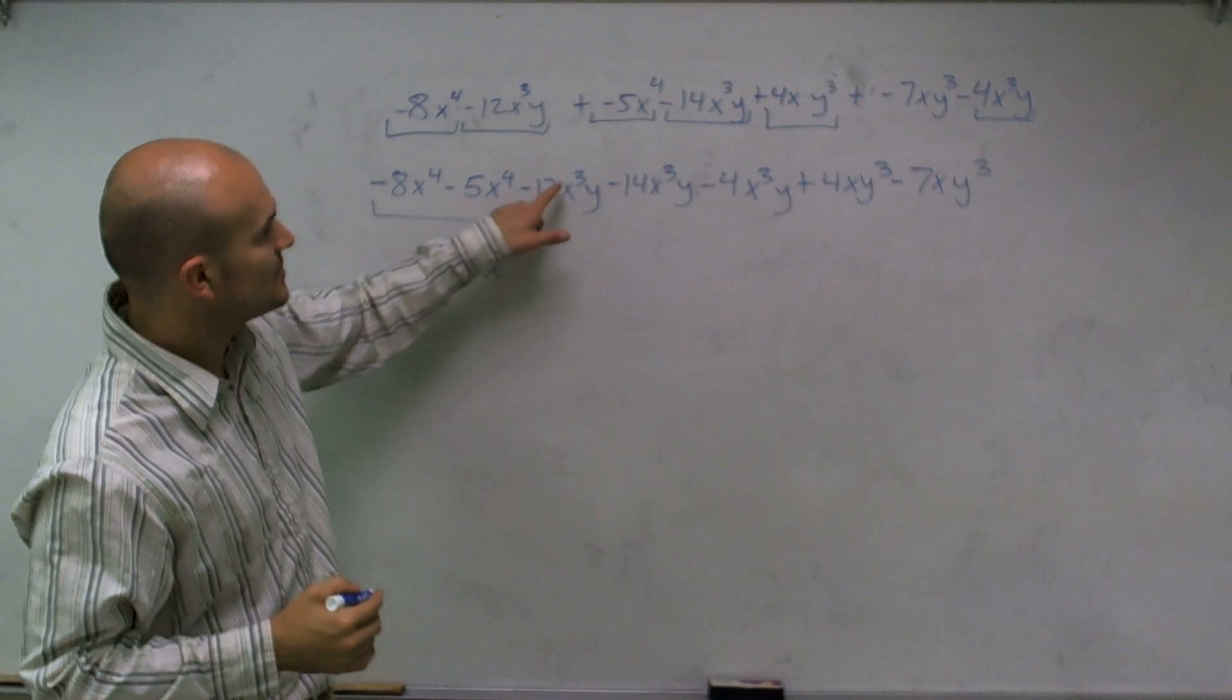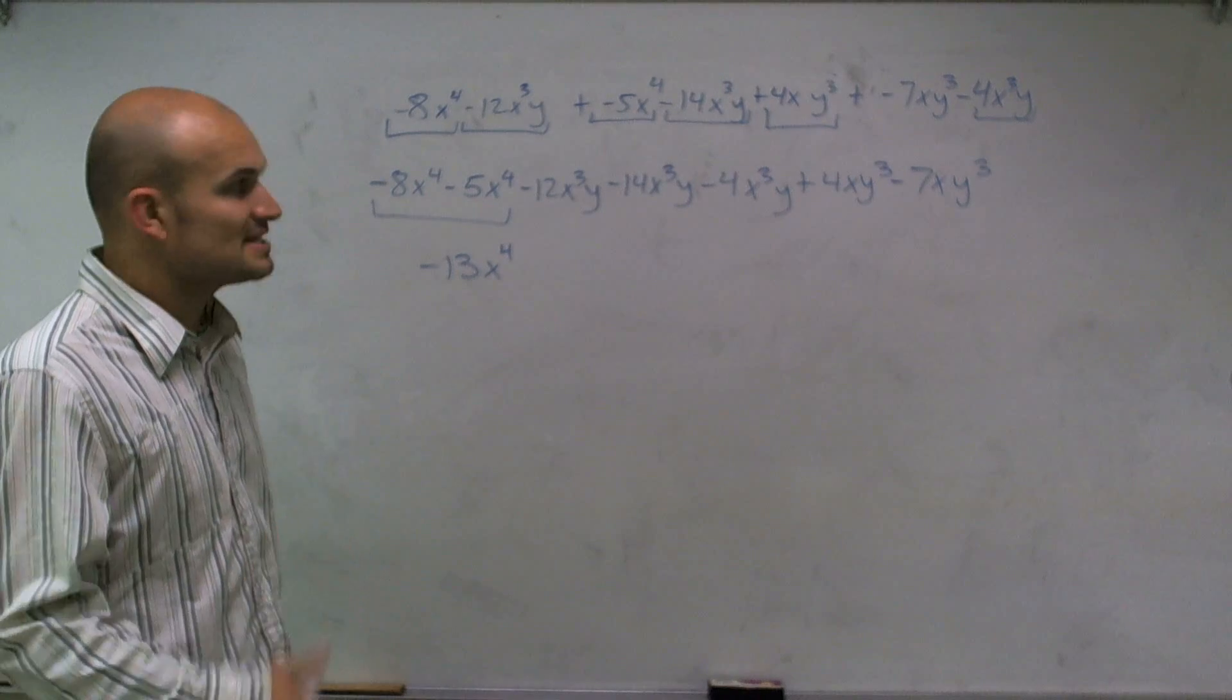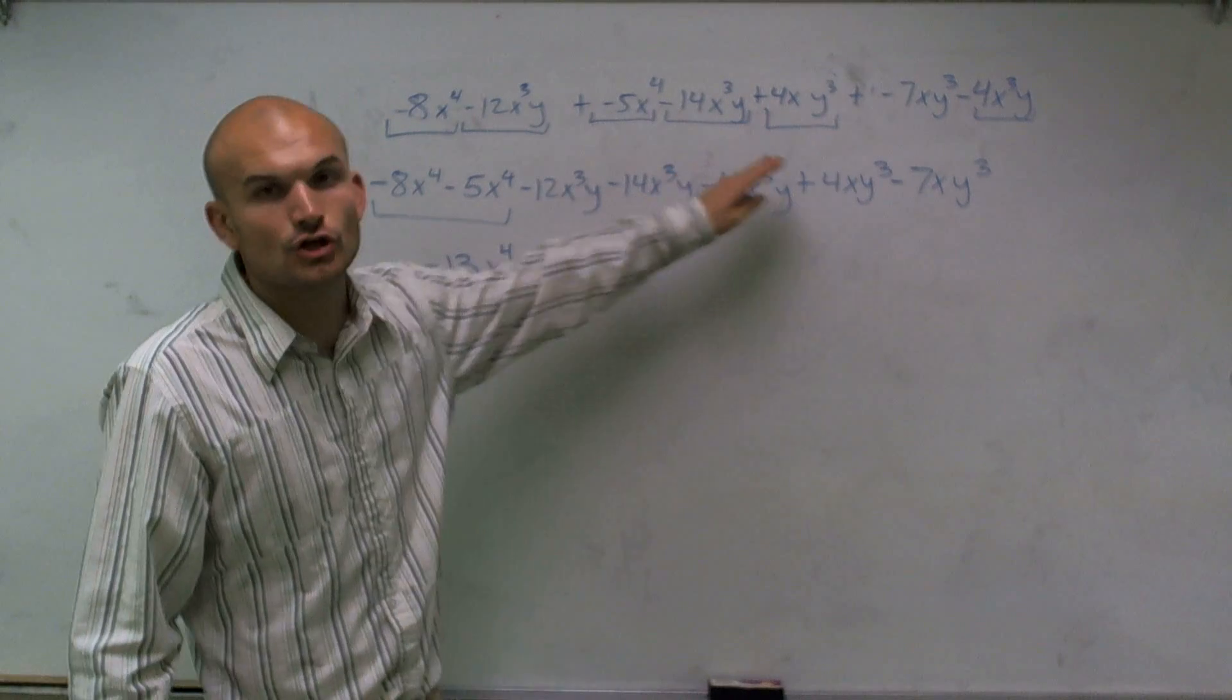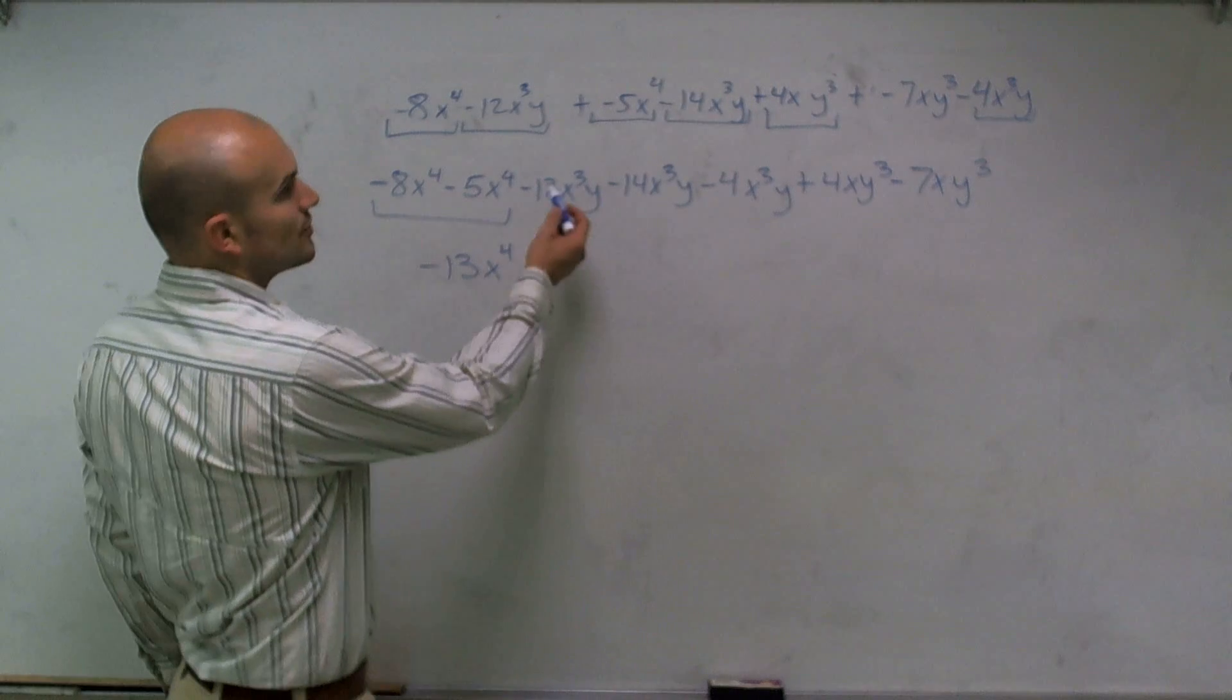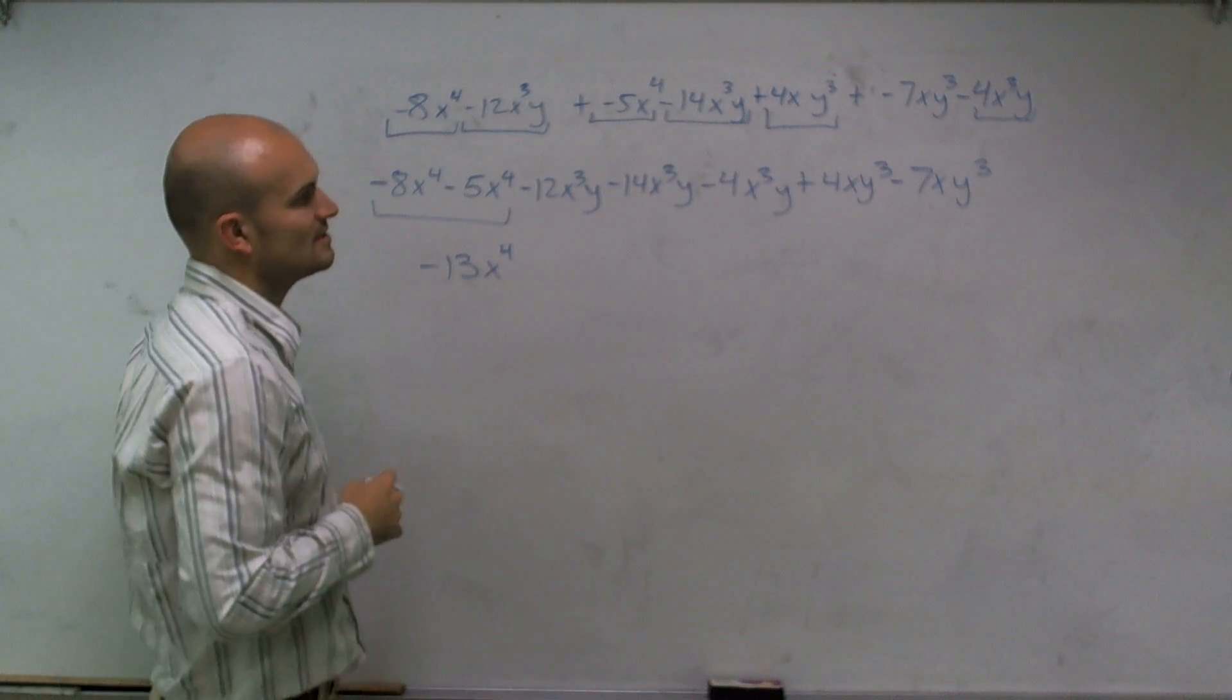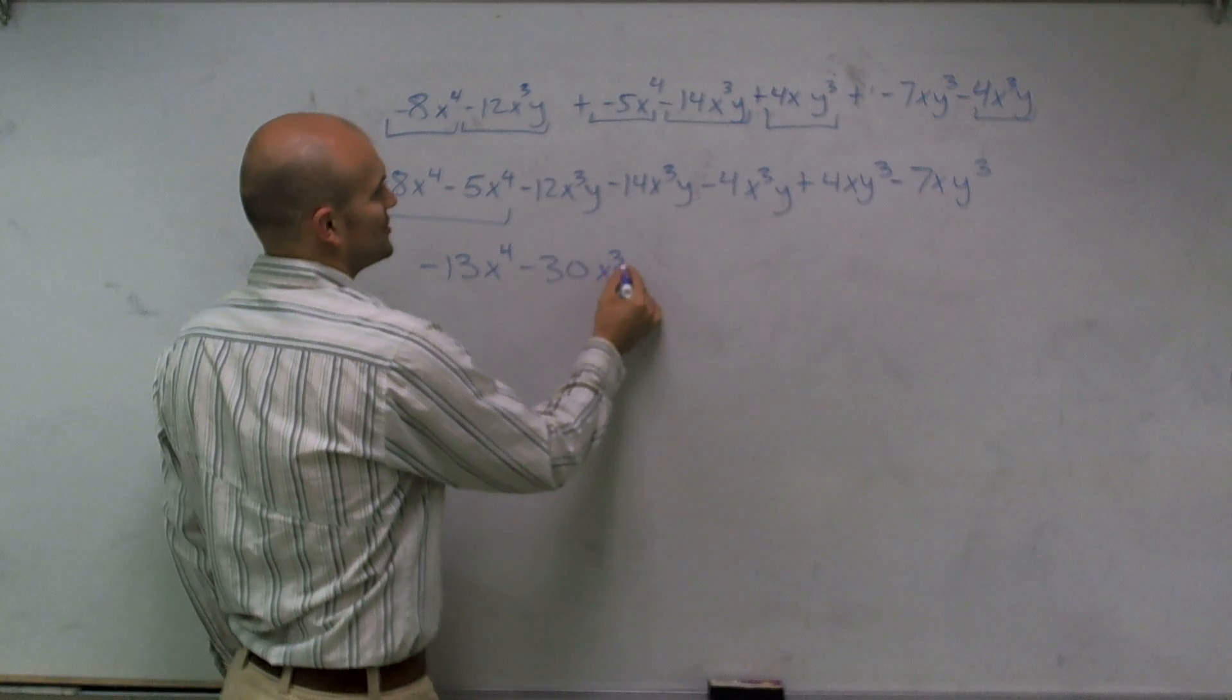Now I do negative 12x cubed y minus negative 14x cubed y minus 4x cubed y. Now, since all the terms are the same, I can just keep on subtracting my two numbers. So negative 12 minus 14 is a negative 26. Minus 4 is going to be a negative 30x cubed y.